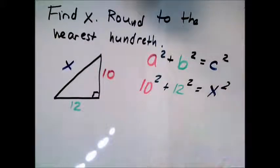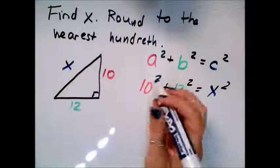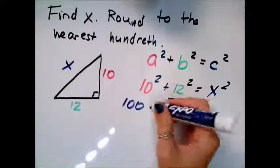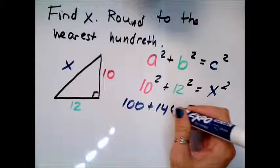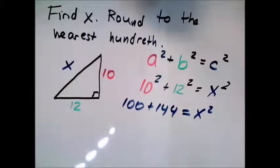So the thing we don't know, so we're trying to get x by itself. So 10 squared is 100. 12 squared is 144. So we can add those together, we get 244.